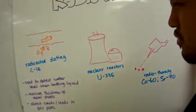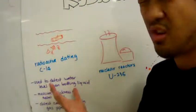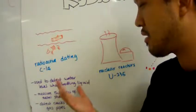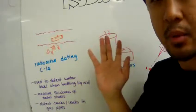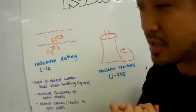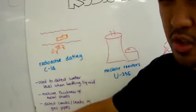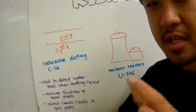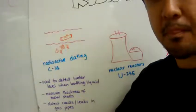Other uses of radioactive isotopes include detecting the water level when you're bottling liquids, whatever that liquid may be. It can also be used to detect the thickness of sheets of metal that has been produced by a factory.